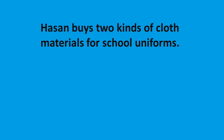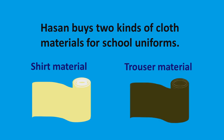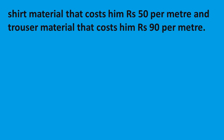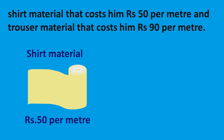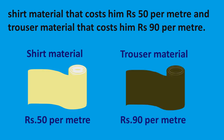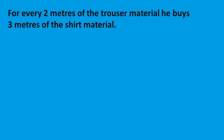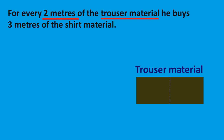Today's problem is: Hassan buys two kinds of cloth materials for school uniforms — shirt material and trouser material. Shirt material costs him Rs. 50 per meter and trouser material costs him Rs. 90 per meter. For every 2 meters of the trouser material, he buys 3 meters of the shirt material.